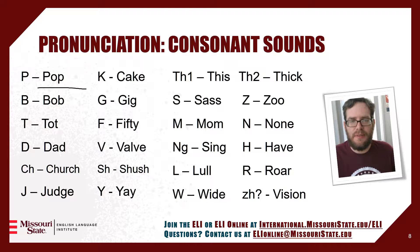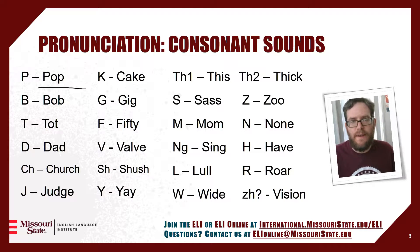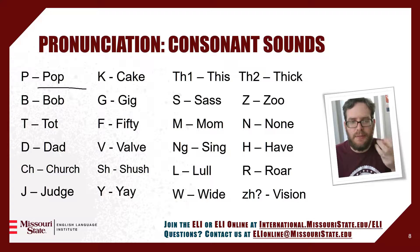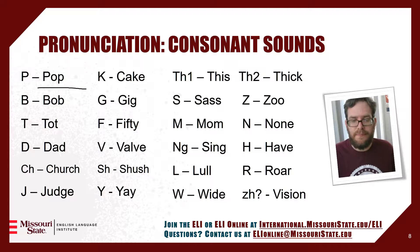We have G, which makes the G sound: gig. Then F — watch my lip, it touches my teeth: F, fifty. Sort of similar to that is valve — my lip also touches my teeth, but there's no puff of air: fifty, valve. Sometimes people struggle with the V sound, sometimes confusing V and B. So pay attention to what your lip is doing — it touches your teeth: valve. We also have shh — for shh, my tongue is kind of forward in my mouth and I'm pushing some air forward: shush. That's different from ch: church.